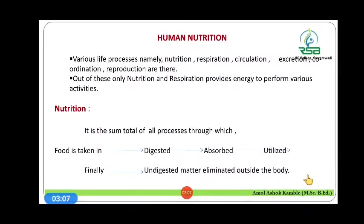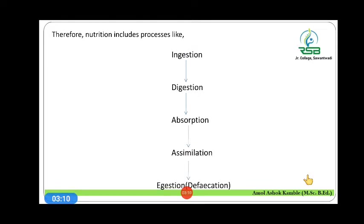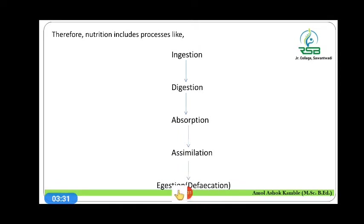The flow chart of nutrition includes: ingestion of food material, then digestion of that food material, then absorption of that food material by various cells, assimilation in the form of protoplasm, and lastly defecation — which eliminates the undigested food material as fecal matter outside the body.